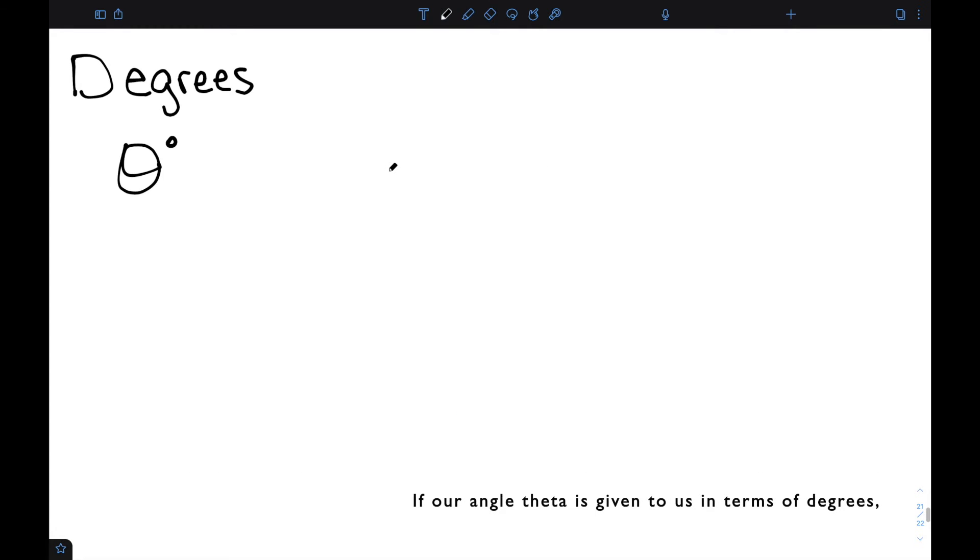If our angle theta is given to us in terms of degrees, coterminal angles look like that angle plus some multiple of 360, the full rotation. And so here k is any integer. It tells me how many full rotations I actually had.